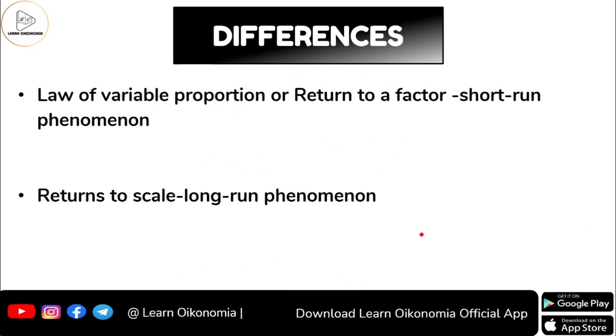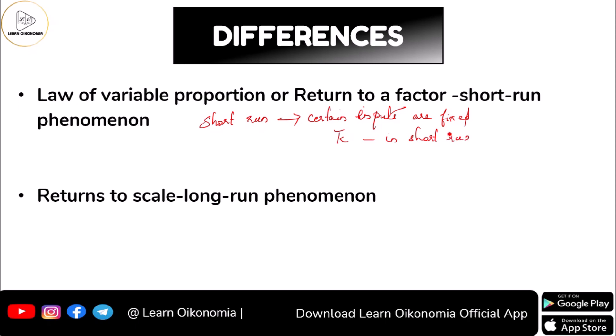In the case of the law of variable proportion, or returns to a factor, we are dealing with a short-run phenomenon. In the short run, certain inputs are fixed. That is why we keep capital constant in the short run and vary only labor to see how it influences output. This is a simplified two-input model explained in the law of variable proportions, where capital is fixed and labor is variable.